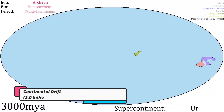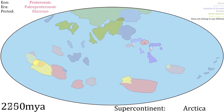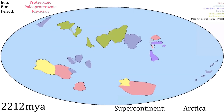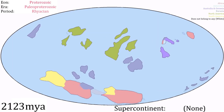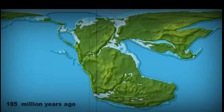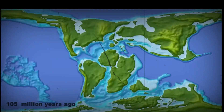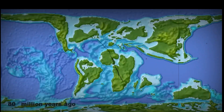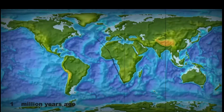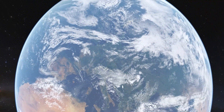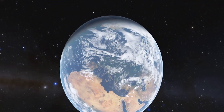Continental drift, 3.0 billion years ago to present. The continents embarked on their own odyssey, dancing to the relentless rhythm of plate tectonics. Over immense expanses of time, they collided, parted ways, and reconfigured the world stage. This ceaseless ballet of continents continues to shape Earth's topography even today.